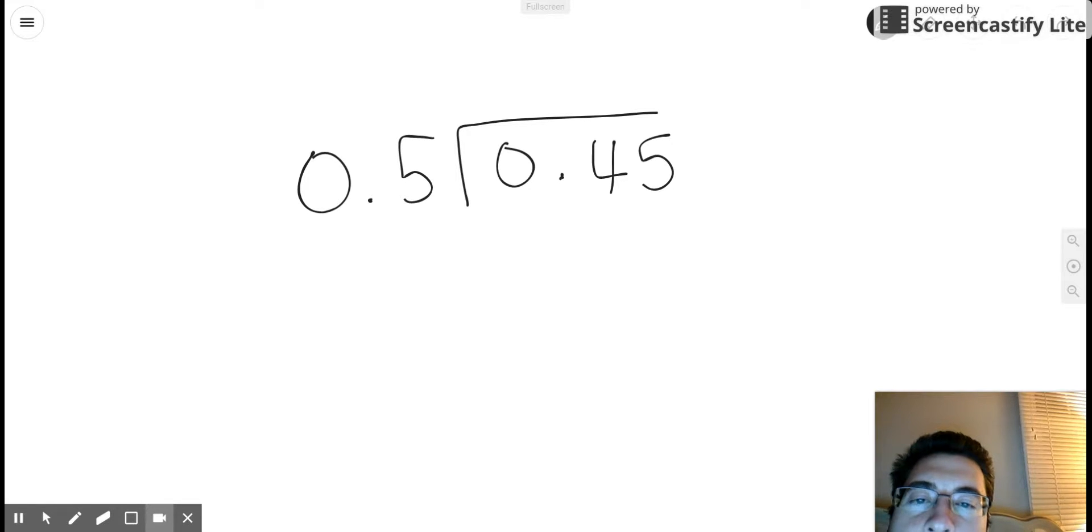So we have 0.45 divided by 0.5, and it turns out we cannot have a decimal in our divisor, so we have to do something to change our 5 tenths into a whole number. How do we do that?